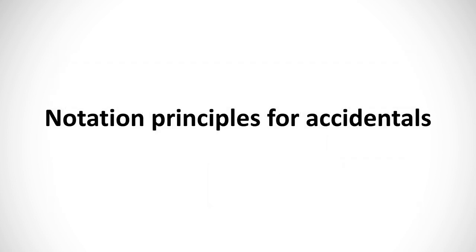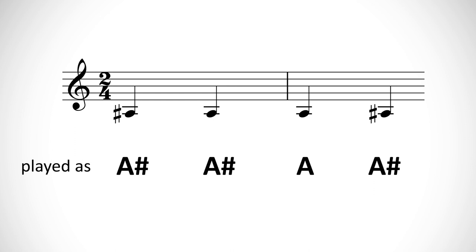Notation principles for accidentals. In notated music, sharps and flats always go to the left of, that is, in front of, the note they alter. In a piece of music, any sharp or flat applied to a note, let's say A with a sharp, will apply to any other appearances of that same note, so any future A's in that same octave, in each measure.